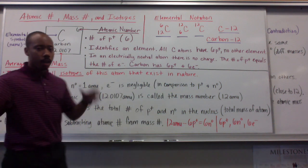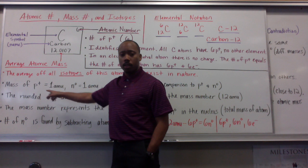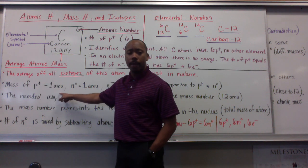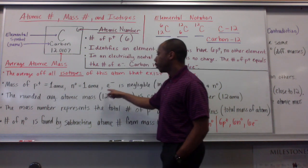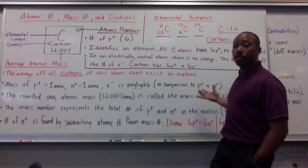First, a little breakdown about mass. The mass of a proton, as we said in the last board, is 1 amu. Neutrons, 1 amu. Electrons, we can say that mass is negligible in comparison to protons and neutrons.